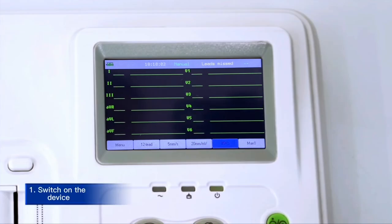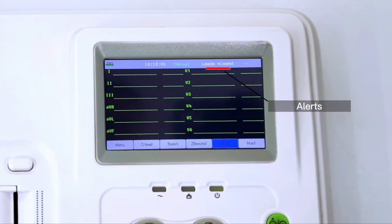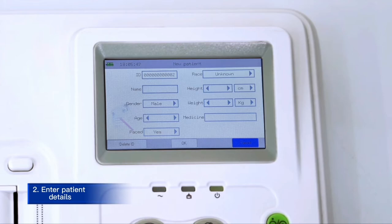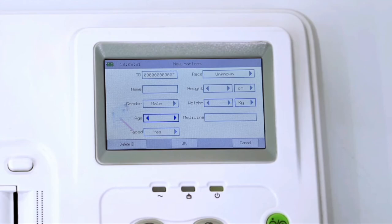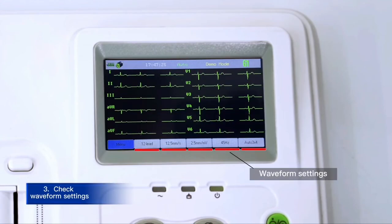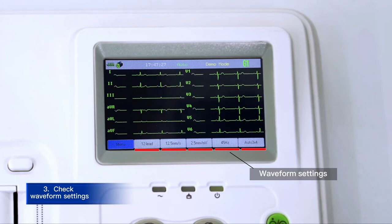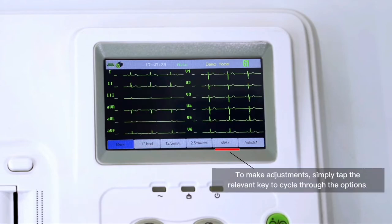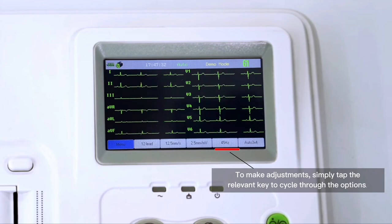Switch on the device using the power key. Alerts such as lead off will be highlighted in a banner at the top of the screen. Press the patient ID key to enter patient details, input the patient details, click OK once finished. Waveform settings can be viewed and adjusted along the bottom of the screen. To make adjustments, simply tap the relevant key to cycle through the options.